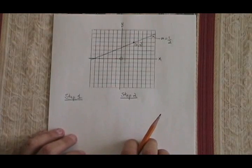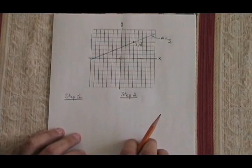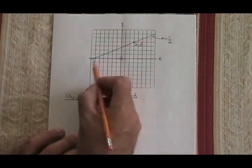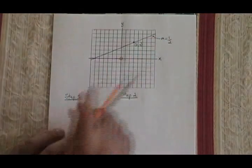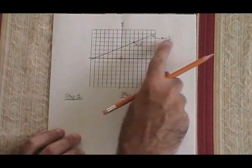My next example shows one of the different ways in which this question can be asked. Find the equation of this straight line. In this case though, we're only given one point, but we're given the slope.